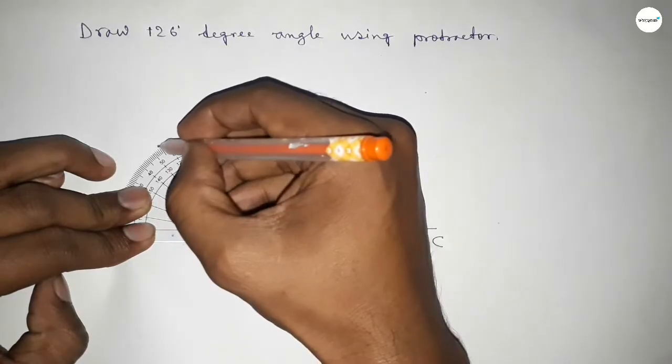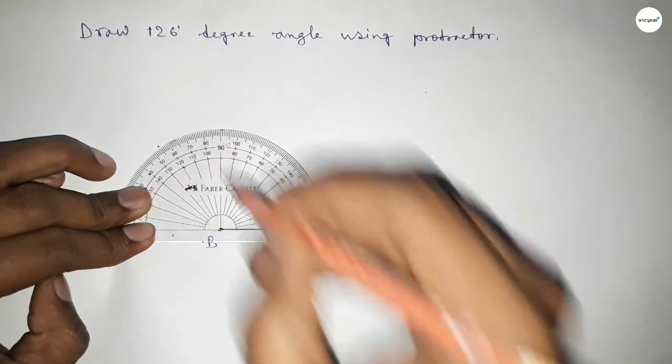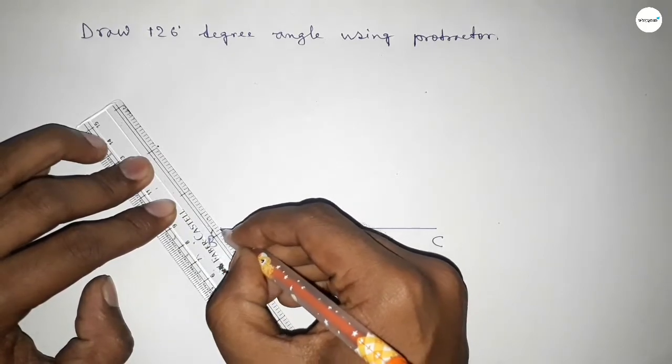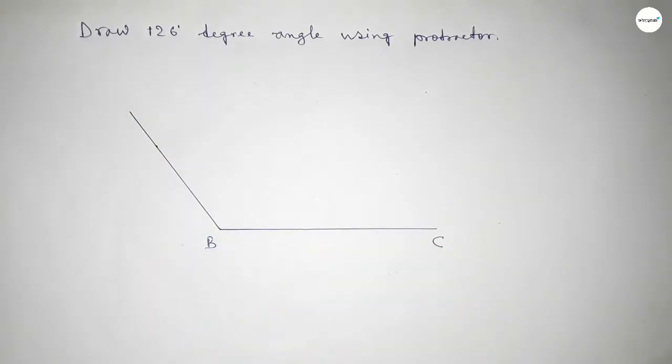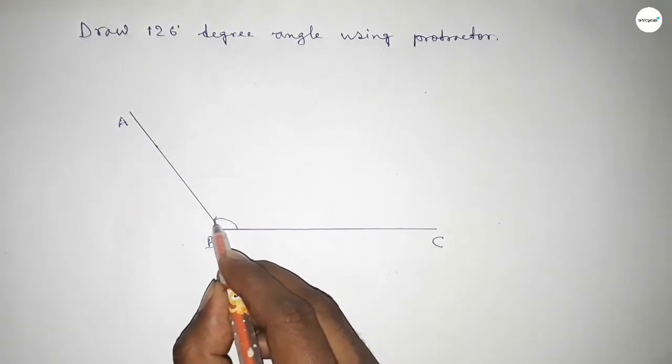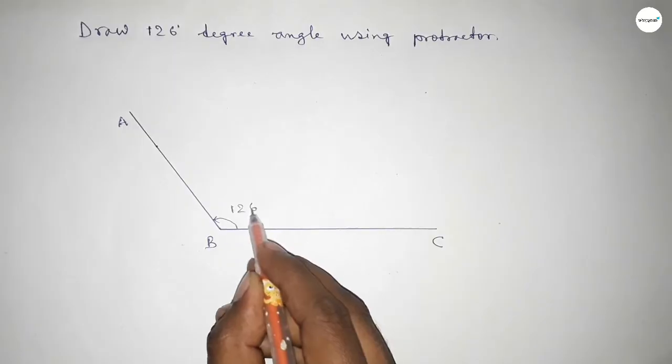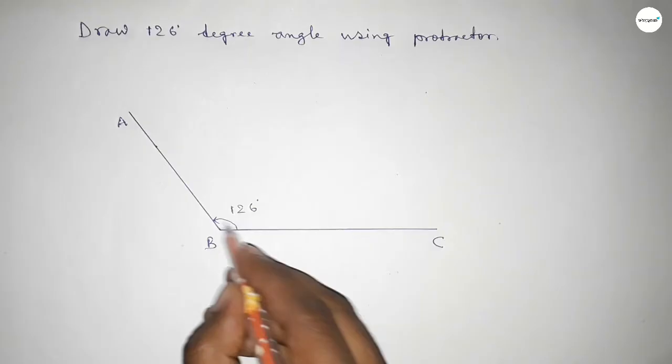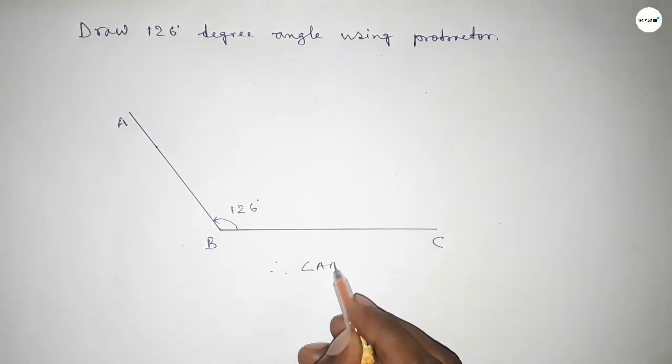Now joining this to get 126 degrees. Now taking here point A. So angle ABC up to this, this is 126 degree angle. Therefore, angle ABC equal to 126 degrees.